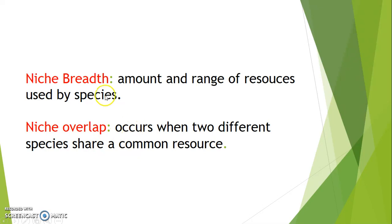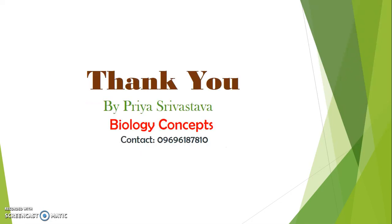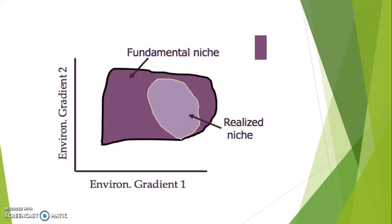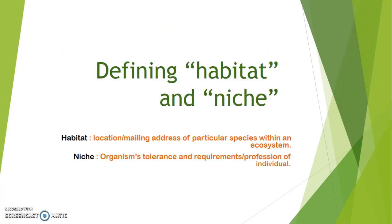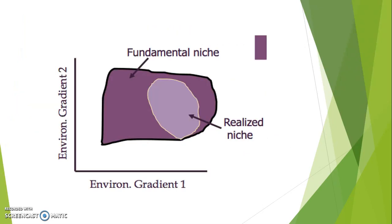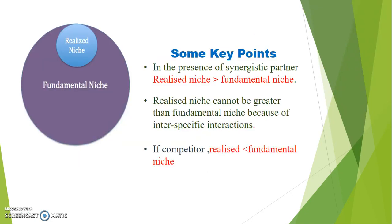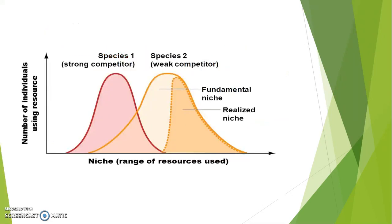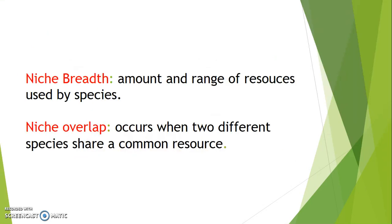Niche breadth refers to how much and what range of resources are used by a species. Niche overlap occurs when two different species share a common resource. To summarize: realized niche is in the presence of biotic stress, fundamental niche is in the absence of biotic stress. Niche breadth, generalist species, and niche overlap describe how resources are utilized between two different species.